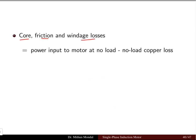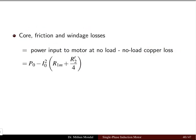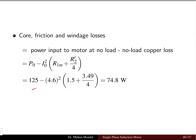The core, friction and windage losses are calculated from the power input at no-load minus the no-load copper losses. The copper loss is given by I² times total resistance. With P₀ = 125 watt, current = 4.6 amps, stator resistance R1 = 1.5 ohms, and rotor resistance referred to stator = 3.49 ohms, substituting these values gives 74.8 watt as the total core, friction and windage losses.